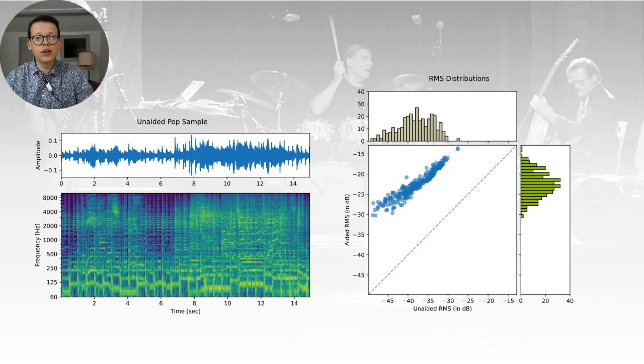Here is the distribution of the RMS for the unaided and aided conditions. So amplification increases the location of the distribution but also reduces the dispersion of the RMS. It's a nice illustration of dynamic range compression.